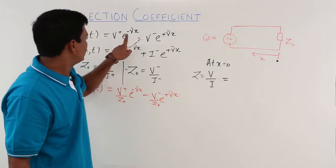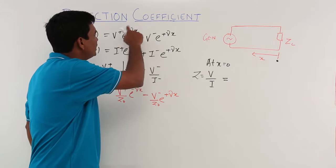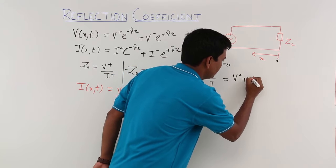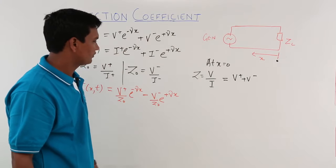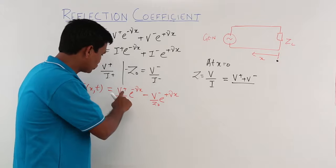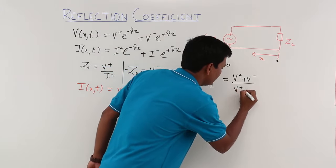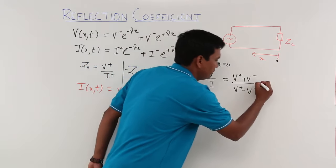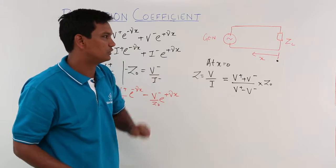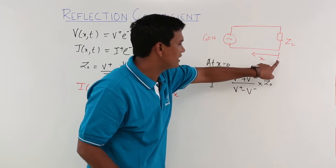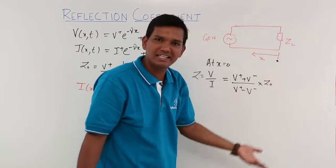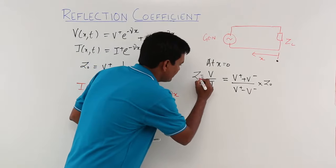Substituting x = 0 into the voltage equation — e^0 = 1 — the voltage becomes V+ + V-. Substituting x = 0 into the current equation, similarly e^0 = 1, so the current becomes (V+ - V-) / Z0. The ratio of voltage to current at x = 0 is the impedance seen at that point, which is the load impedance ZL.